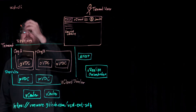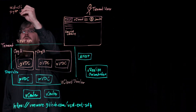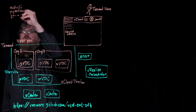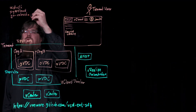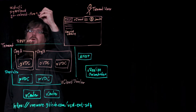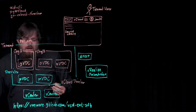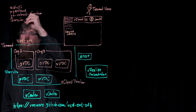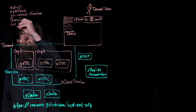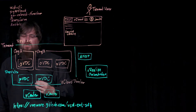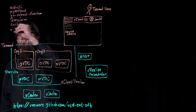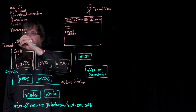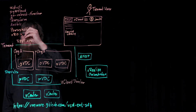We also have Python bindings, Go bindings, and modules for Terraform and Ansible. In addition to that, there are also PowerShell commandlets for vCloud Director, and there is a vRealize Orchestrator plugin.